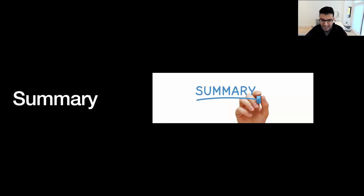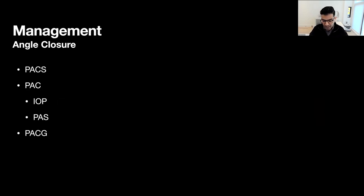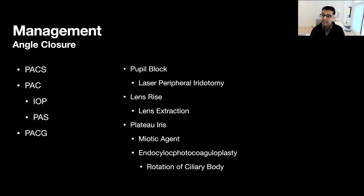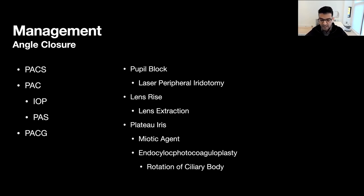In conclusion, in the world of primary angle closure disease: PACS patients have an anatomy with closed angles; PAC patients have developed some increased IOP or scar tissue; and PACG patients have an associated glaucomatous optic neuropathy or characteristic visual field defect. Our treatment should be based on the underlying mechanism — whether that is laser peripheral iridotomy for pupil block, lens extraction for lens rise, or miotic aids or endocyclophotocoaguloplasty for plateau iris. The decision to proceed with intervention should be based on a risk analysis specific to the patient, where suspect patients should consider laser intervention and glaucoma patients should consider incisional lens extraction with or without additional angle surgery.